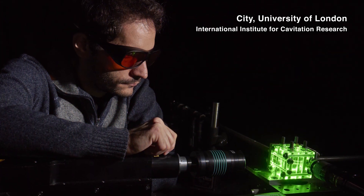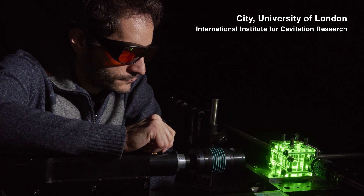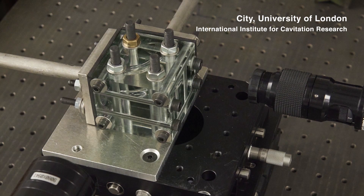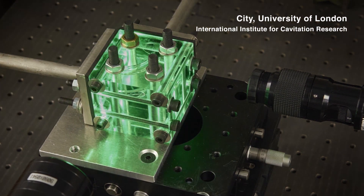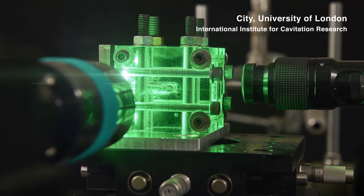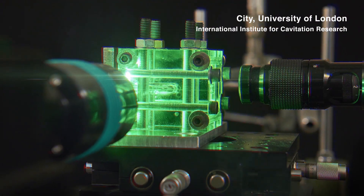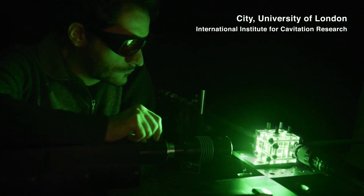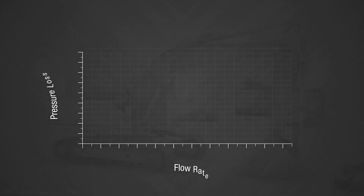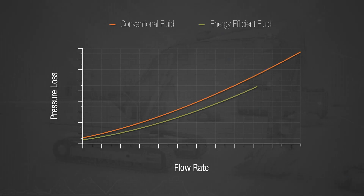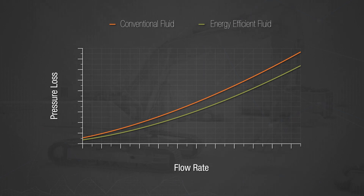Visualisation of these complex fluid flows using particle image velocimetry allows formulations to be designed and optimised to minimise power loss from inefficient secondary flow. Consequently, hydraulic pressure losses are lowered and the overall efficiency of the system increases.